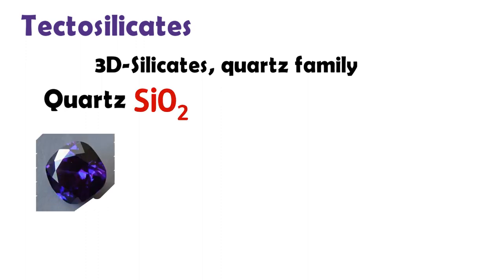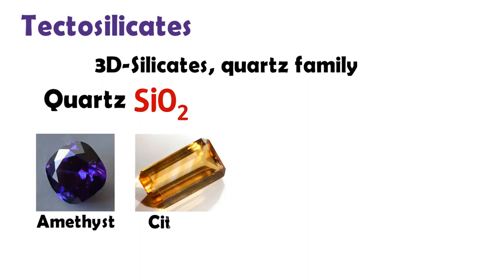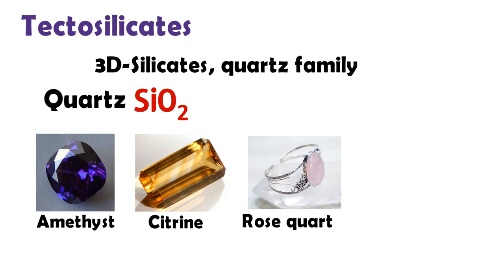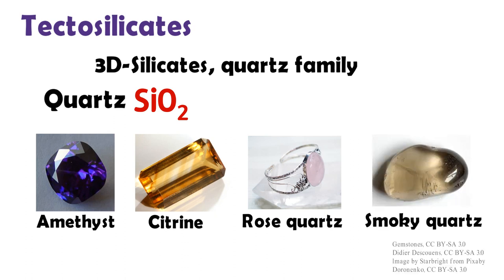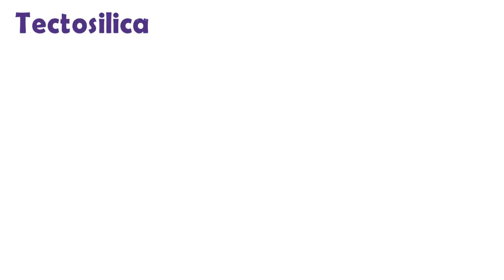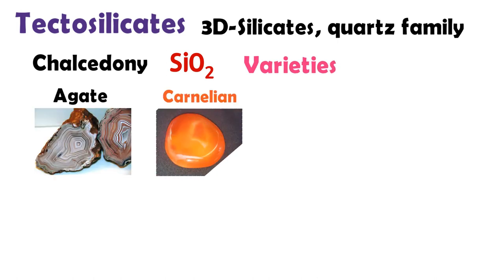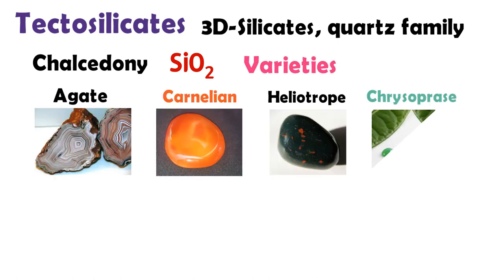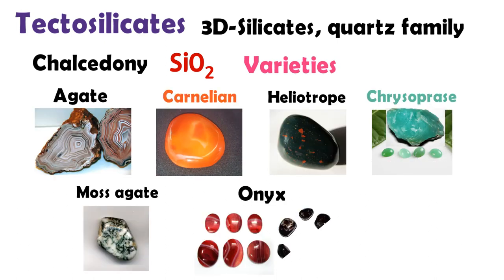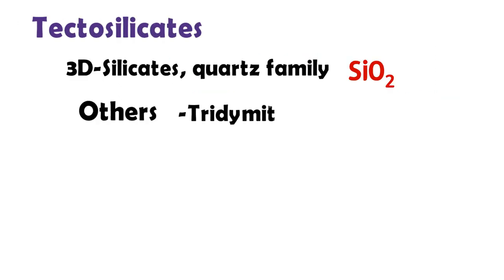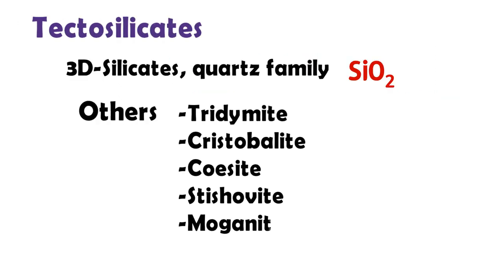Quartz has various colors: amethyst as violet, citrine as yellow, rose quartz as pink, and smoky quartz as gray. As the quartz family, various chalcedony varieties are agate, cornelian, heliotrope, chrysoprase, moss agate, and onyx. Opal varieties include tridymite, cristobalite, opal, stishovite, and moganite.